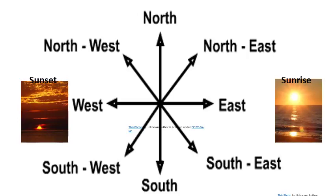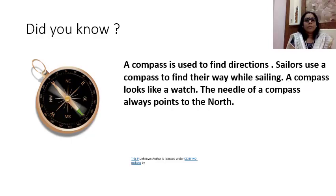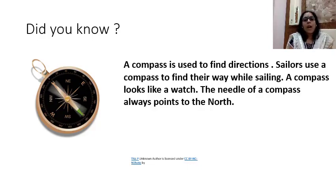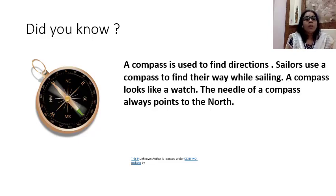You will see the direction north marked in most maps. These directions help us to locate places on a map. Now children, see this picture. This is a compass. A compass is used to find directions. Sailors use a compass to find their way while sailing. A compass looks like a watch. The needle of a compass always points to the north.